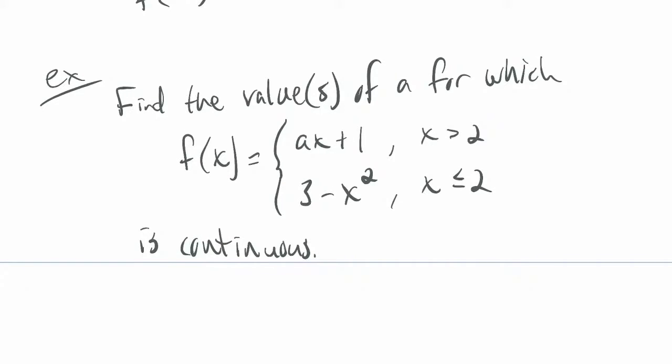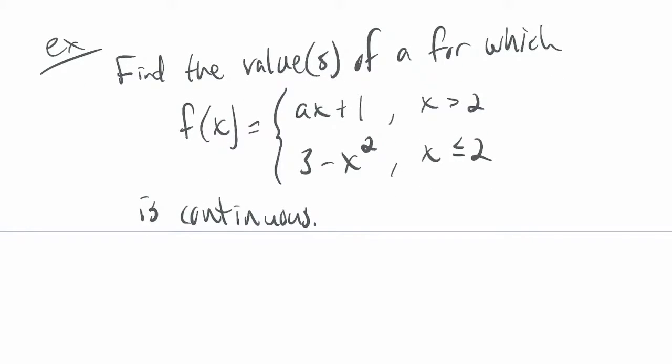So we started this example last time. We just gave the statement of it. We didn't really do much with it. So we have this piecewise defined function where there's what's called a parameter. It's not quite a variable. Like, x is a variable in the sense that you could plug in anything for x.